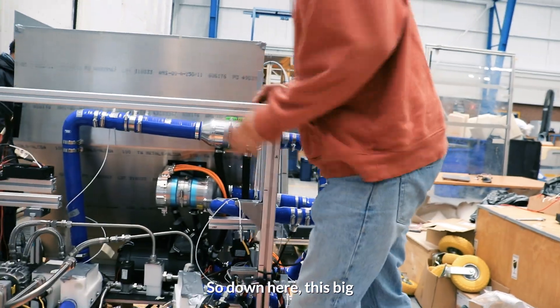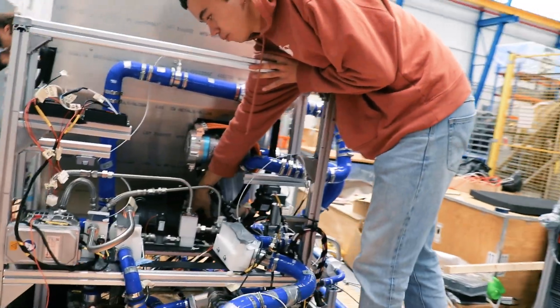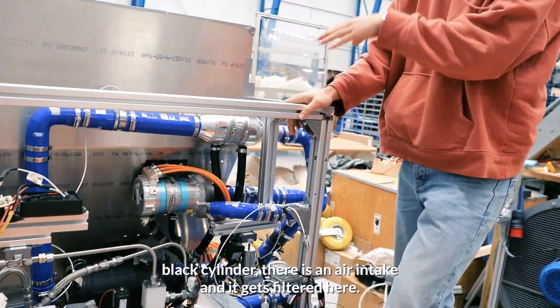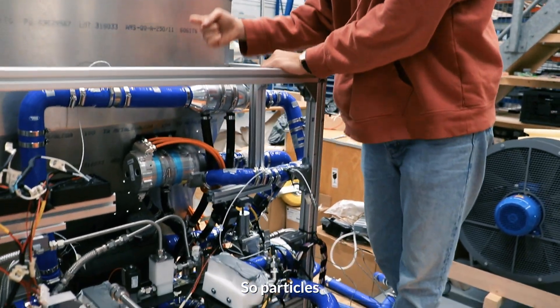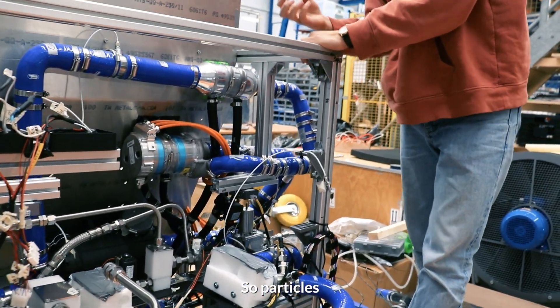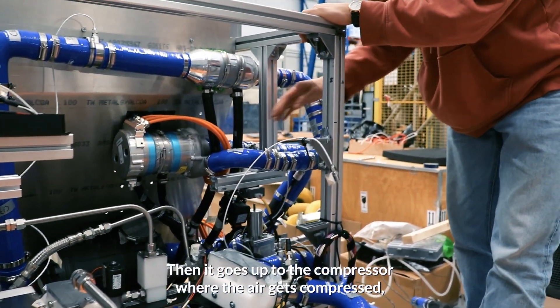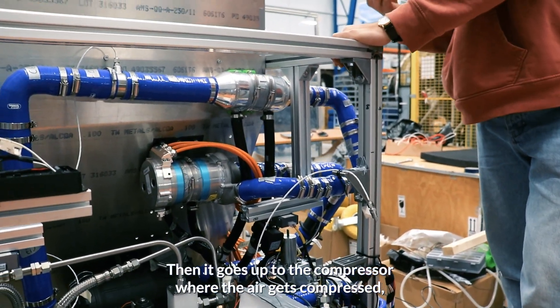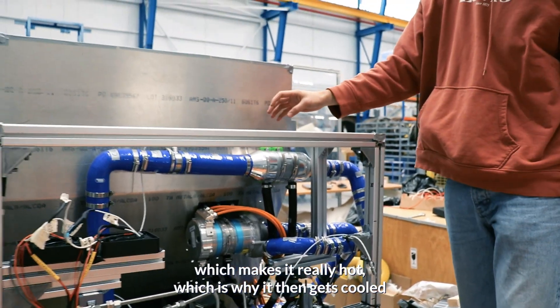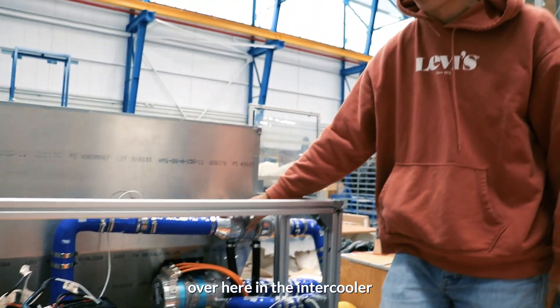So down here, this big black cylinder, there is an air intake and it gets filtered here, so particles get filtered out of the air. Then it goes up to the compressor where the air gets compressed, which makes it really hot, which is why it then gets cooled over here in the intercooler.